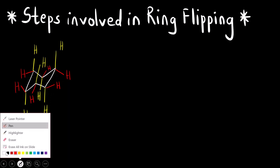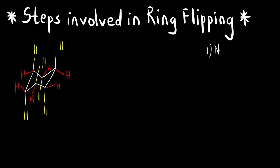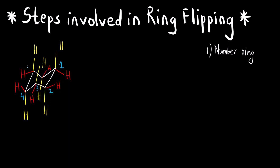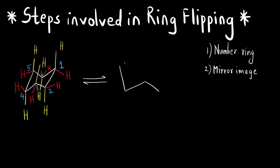Step one is to number the given cyclohexane ring: 1, 2, 3, 4, 5, and 6. Step two is to draw the mirror image of the given cyclohexane ring. Both conformers are in equilibrium with each other at room temperature, so we draw the mirror image of only the cyclohexane ring. Second step is now completed.